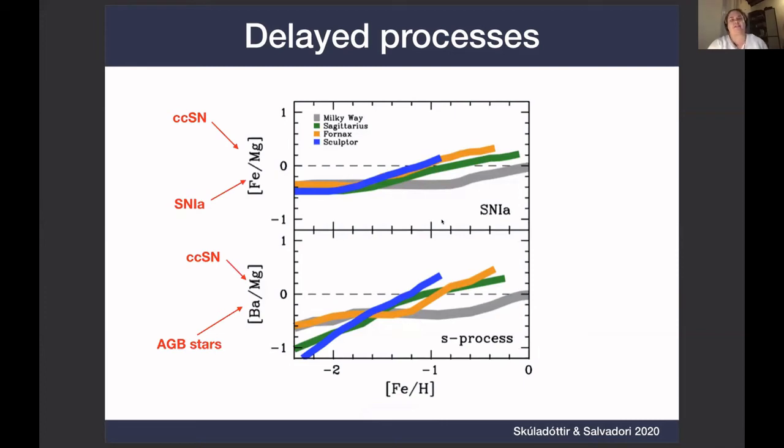So what we see here are average trends of stars, Milky Way in gray, and dwarf galaxies in colors. On the top panel, we see that the products of the supernova type 1a relative to core-collapse supernova becomes more and more dominant as the galaxies evolve with time and become more metal-rich. The same happens for the s-process. This happens for all delayed processes, this qualitative increase. The details depend on the star formation of the galaxy in question, but this qualitative increase is something very universal.